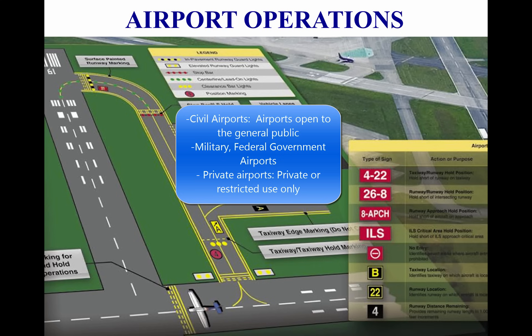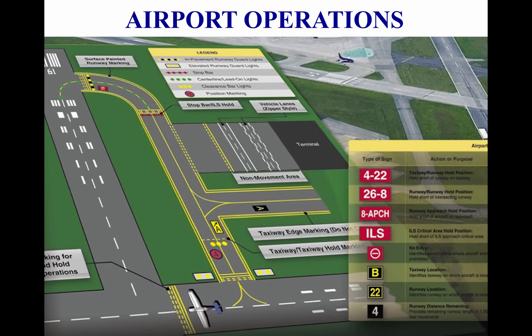Private airports are designated for private or restricted use only, not open to the general public. A towered airport has an operating control tower. Air Traffic Control is responsible for providing the safe, orderly, and expeditious flow of air traffic at airports where the type of operations and/or volume of traffic requires such a service. Pilots operating from a towered airport are required to maintain two-way radio communications with air traffic controllers and to acknowledge and comply with their instructions. Pilots must advise ATC if they cannot comply and request amended instructions. A pilot may deviate from an air traffic instruction in an emergency but must advise ATC of the deviation as soon as possible.